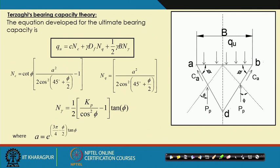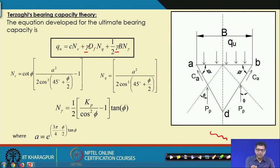Terzaghi's bearing capacity equation in its final form is: q = C·N_c + gamma·D_f·N_q + 0.5·gamma·B·N_gamma. Here we have two gamma values — the first gamma represents the soil above the base of the foundation, and the second gamma represents the soil below the base of the foundation. The influence zone for bearing capacity is taken from the base of the footing down to a depth equal to B, the width of the footing.